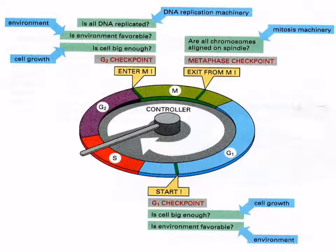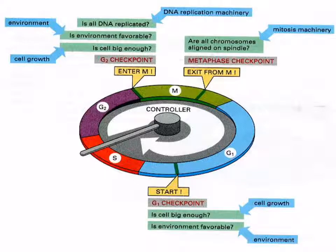The cell cycle is essential for life and needs to proceed perfectly every single time to get two identical daughter cells with no damage. There are a number of checkpoints built into the process. Things that need to be checked include whether all the DNA has been replicated, whether the environment is favourable, whether the cell is big enough, and whether all chromosomes are aligned on the spindle.